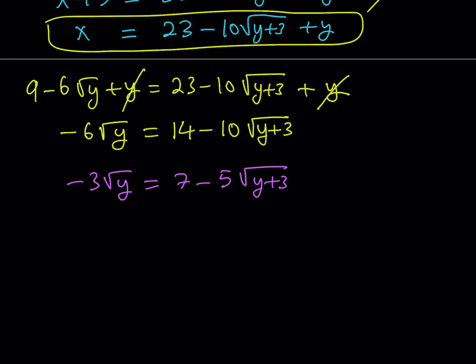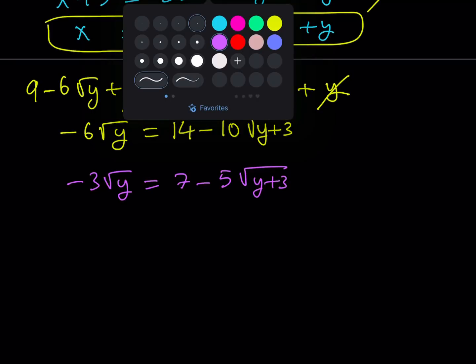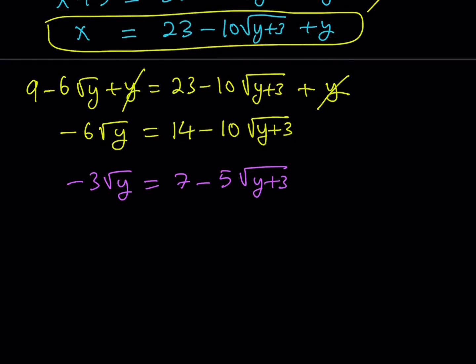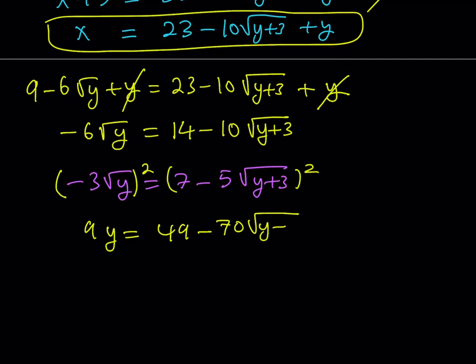One thing to remember about radical equations and systems is that when you find the answer, you have to check that they satisfy the original equation, because we may get extraneous solutions due to squaring both sides. So let's go ahead and square both sides again. This gives me 9y equals 49 minus 70 times the square root of y plus 3, plus 25 times y plus 3.